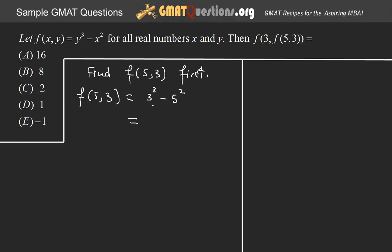So this is equal to 3 cubed, I believe is 27, minus 25. This is equal to, you can write f(5, 3), let me write this better, is equal to 2.